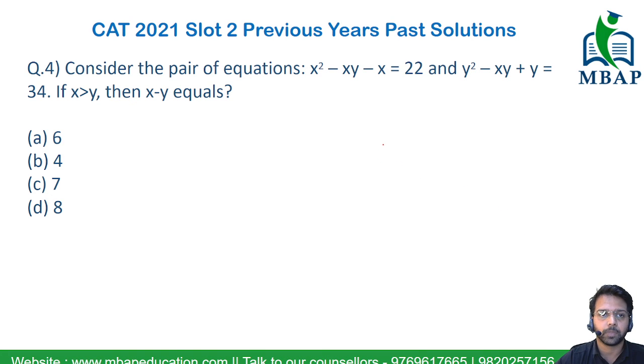Let's have a look at the next question. Consider the pair of equations: x² - xy - x = 22 and y² - xy + y = 34. It's also been given that x is more than y. The question asks you to find the difference x minus y.